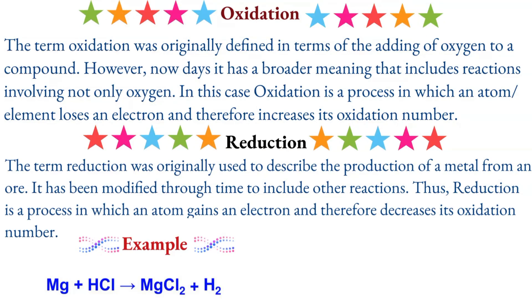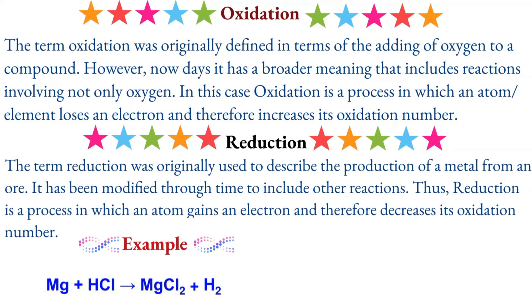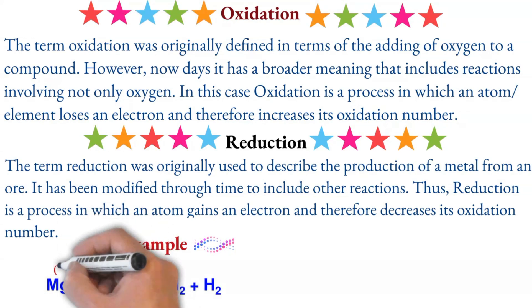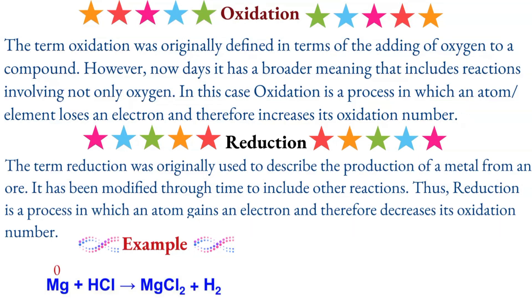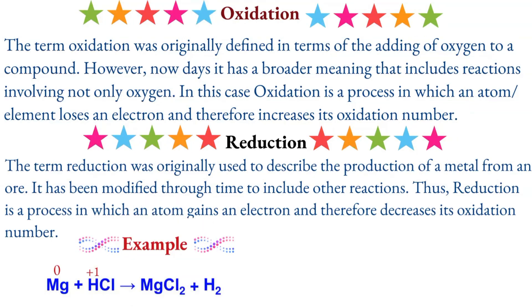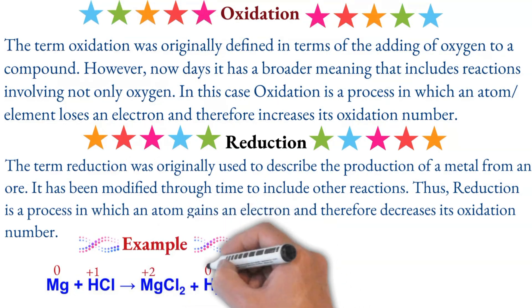As an example, hydrochloric acid reacts with magnesium to produce magnesium chloride. Magnesium has an oxidation number of zero — free elements are zero. The hydrogen has an oxidation number of plus 1, and in the product the oxidation number of magnesium becomes plus 2.